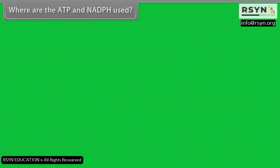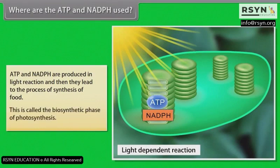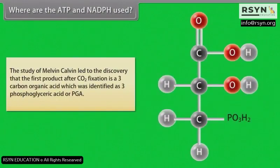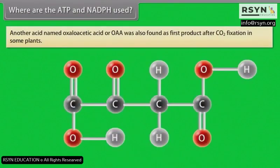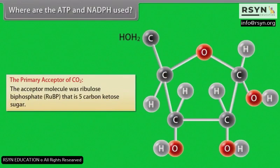ATP and NADPH produced in the light reaction lead to the biosynthetic phase of photosynthesis. Melvin Calvin's research revealed that the first product after carbon dioxide fixation is a 3-carbon organic acid, 3-phosphoglyceric acid (PGA). In some plants, oxaloacetic acid (OAA) was also found as a first product after CO2 fixation. The primary CO2 acceptor molecule is ribulose bisphosphate (RuBP), a 5-carbon ketose sugar.